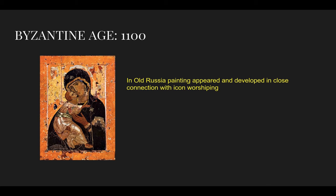In old Russia, paintings appeared and developed in close connection with icon worshipping. Alongside Christianity, Russian masters adopted the Byzantine artistic style and technique. Byzantine art remained almost unchanged in Russia, and many Byzantine elements — such as clusters of domes and towers with perimeter roofs — remained part of Russian architecture.